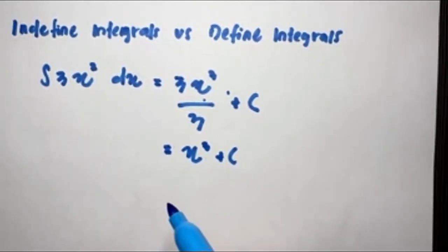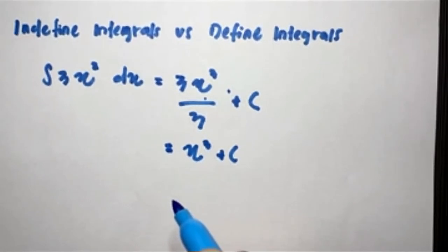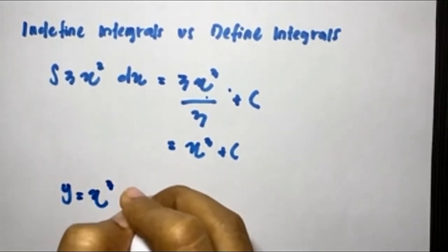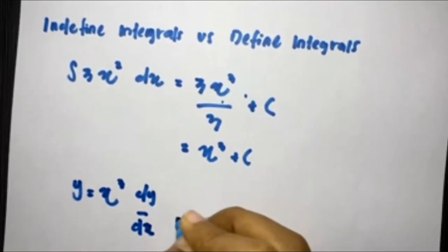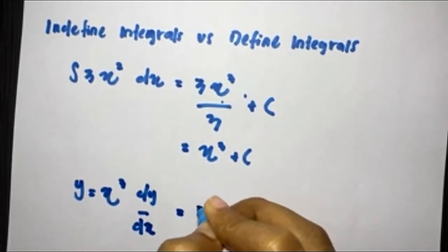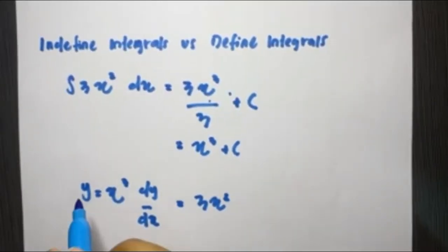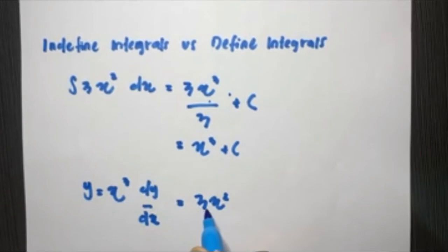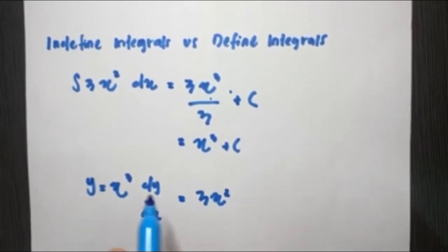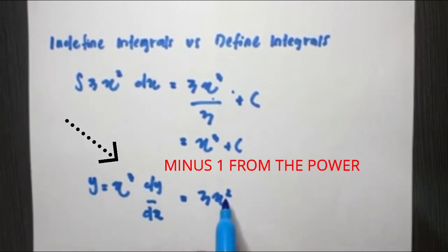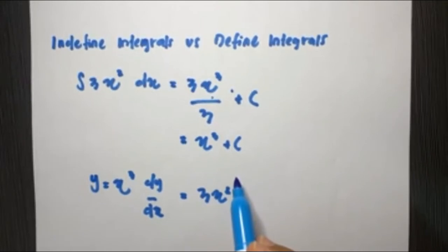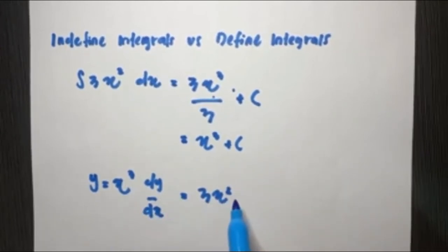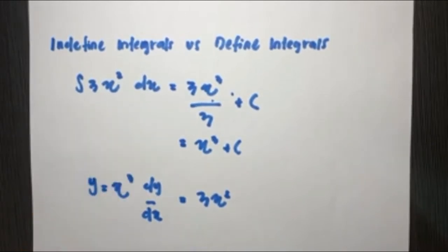A good way to check that we've done this properly is to differentiate. If y = x³ + C, then dy/dx = 3x². The power becomes 2 because we subtract 1 from the power. As for C, it's a constant — when you differentiate it, it turns into 0. So we get back 3x², which is what we started with.